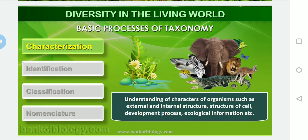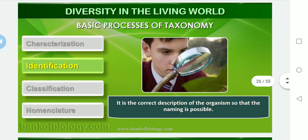The first step is characterization. Whenever you see any organism, we have to understand its characters — such as external and internal structures, the structure of the cell, developmental processes, and ecological information. On the basis of that we will categorize the organism. Whatever we observe as external and internal structures will be considered as the characterization, and we note the characteristics of that particular organism, whether it is a plant or animal.